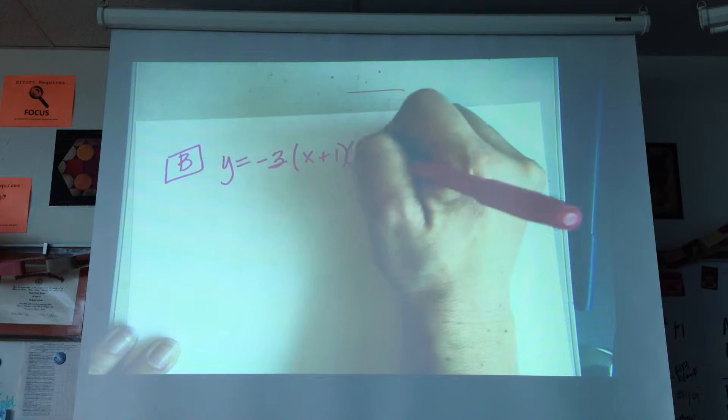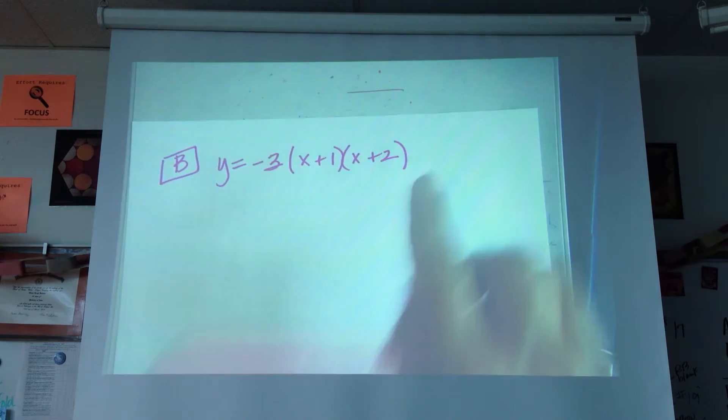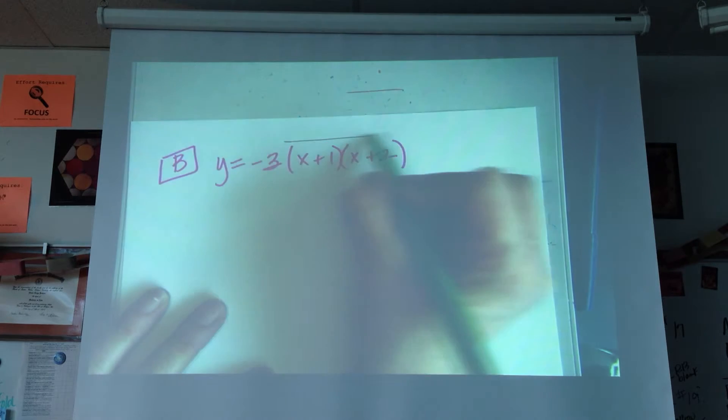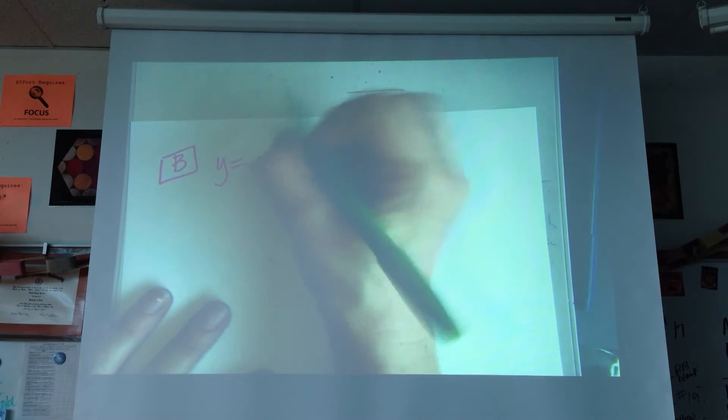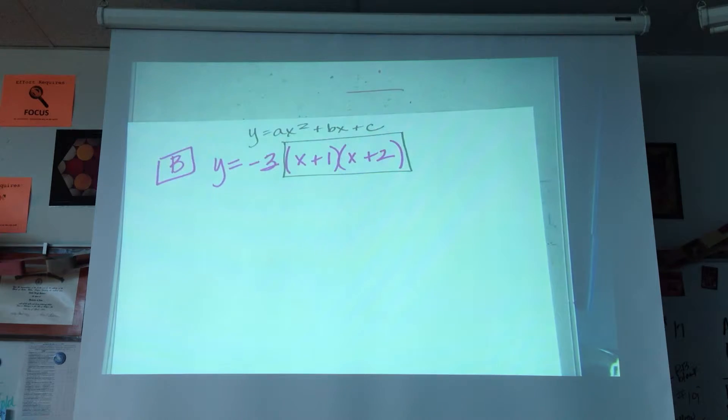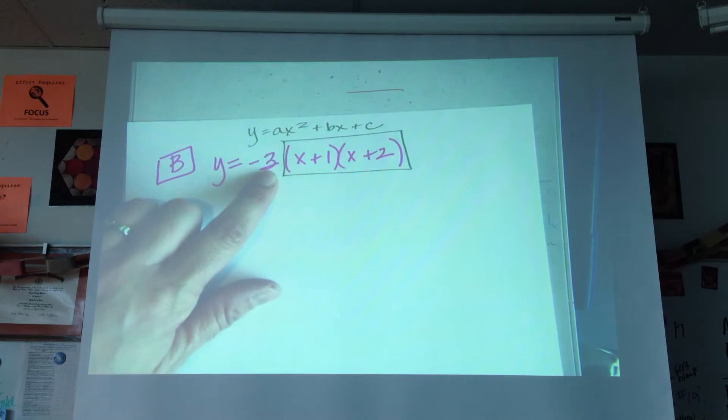Once we put it in standard form, we need to compare this to what we have in standard form in our calculators to make sure that we did the math right. Now, if we're going to expand this into standard form, we need to get it into Y equals AX squared plus BX plus C. To do that, we have to multiply those two binomials together, and then we'll go back and distribute this negative 3.